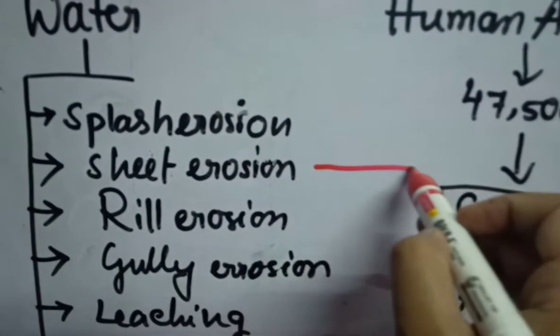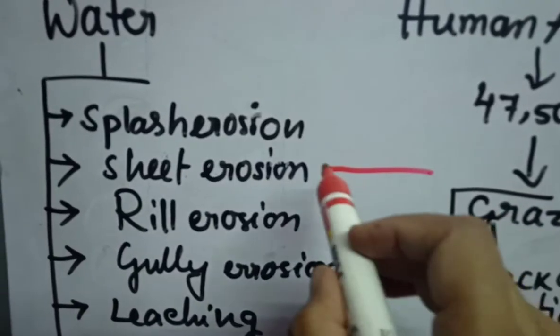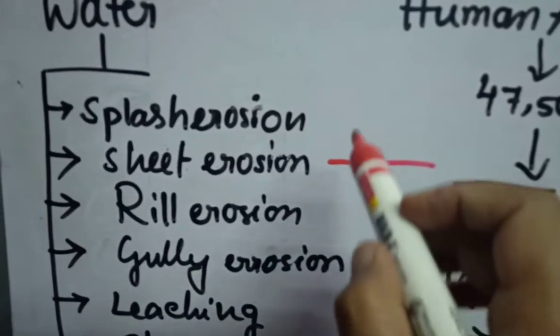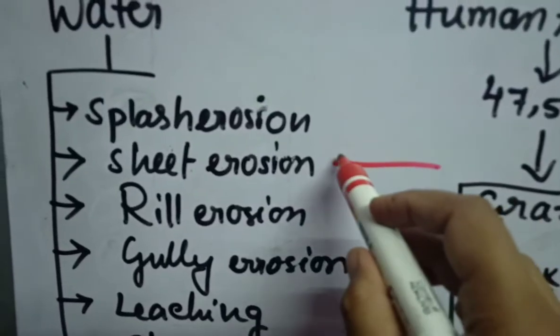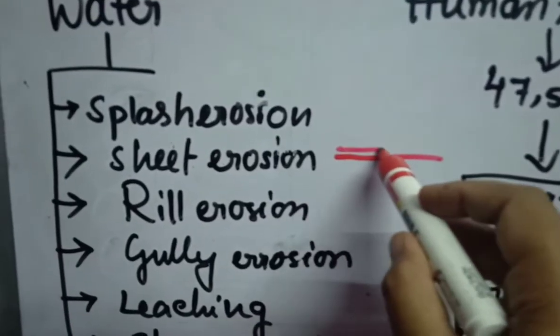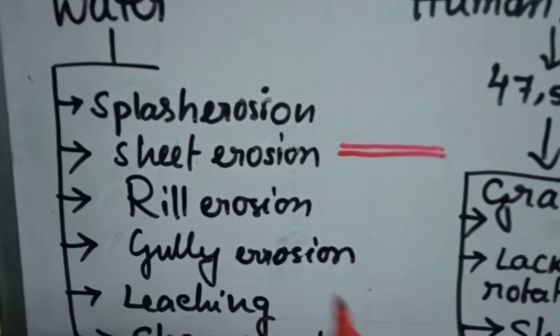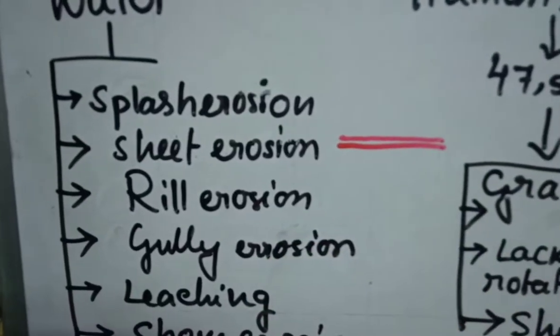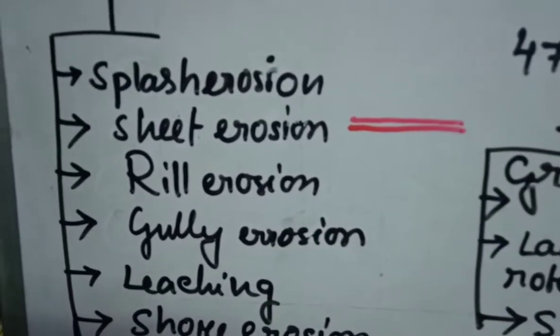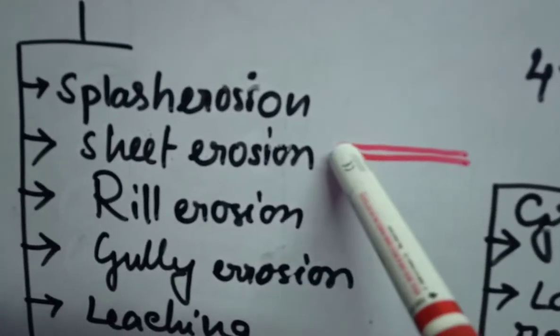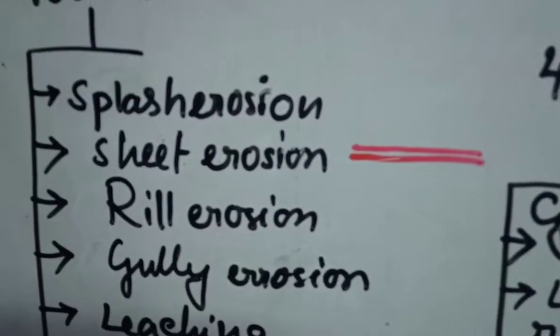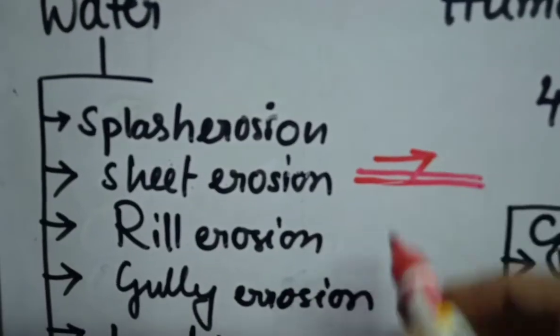Sheet erosion means, just see here, this is the surface of the land and if this splash erosion continues happening, then over this, a thin layer of the soil will be eroded by this runoff water. Okay, this is called sheet erosion. It means a thin layer totally over this surface will be eroded.